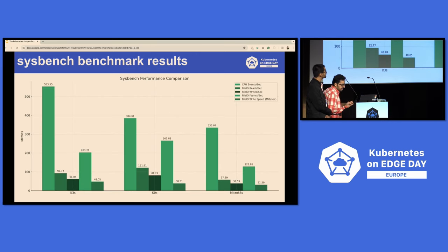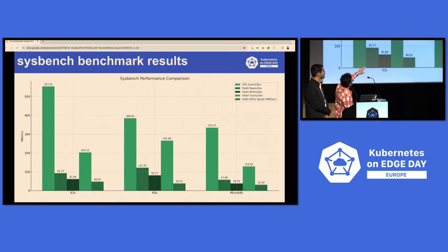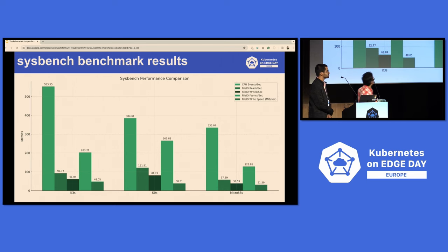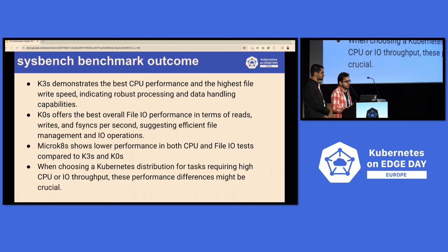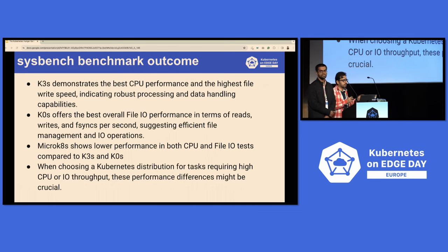Looking at the results: K3s is faster in CPU performance, but for file operations K0s exceeds K3s in overall read/write. K3s demonstrates the best CPU performance with high write speed, indicating robust processing and data handling. K0s offers the best overall file I/O in terms of reads, writes, and syncs per second. MicroK8s is a bit on the lower side. So whenever you're choosing a distribution, if read/write operations or CPU cycles matter to you, this benchmark would help.